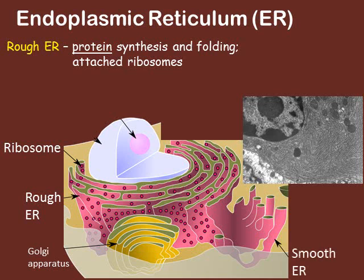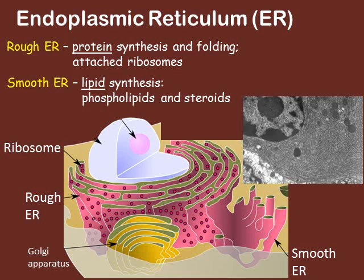The other component of the endoplasmic reticulum is the smooth ER. This portion of the endomembrane system makes lipids — so lipid synthesis. Lipids like the phospholipids that make up all the membranes of these structures as well as the cell, and certain steroids.